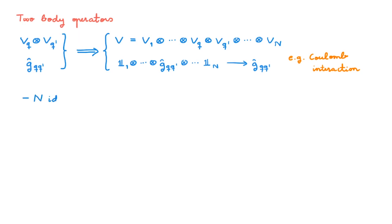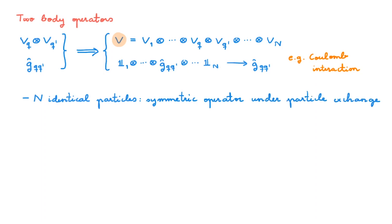If we now move to a system of n identical particles, we know that exchanging any two particles leads to exactly the same physics, so our state space is no longer V but instead a subspace of V spanned by totally symmetric states for bosons or totally anti-symmetric states for fermions. Similarly, operators acting on identical particles must stay the same when we exchange any two particles, meaning we must work with totally symmetric operators. For two-body operators, we obtain a symmetric operator capital G by setting it equal to one-half the sum over q and q' from 1 to n of g_{qq'}, with q different from q'.